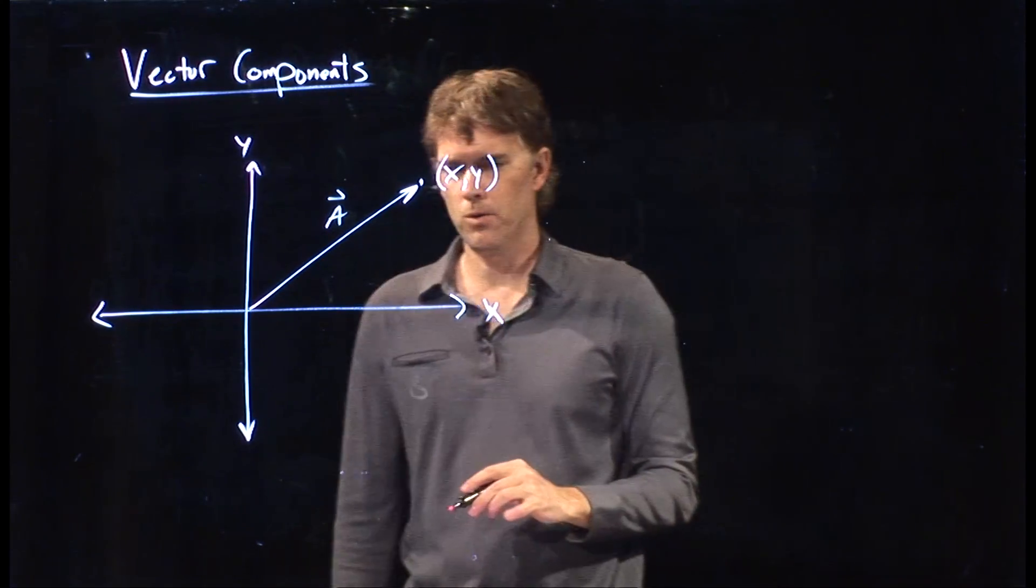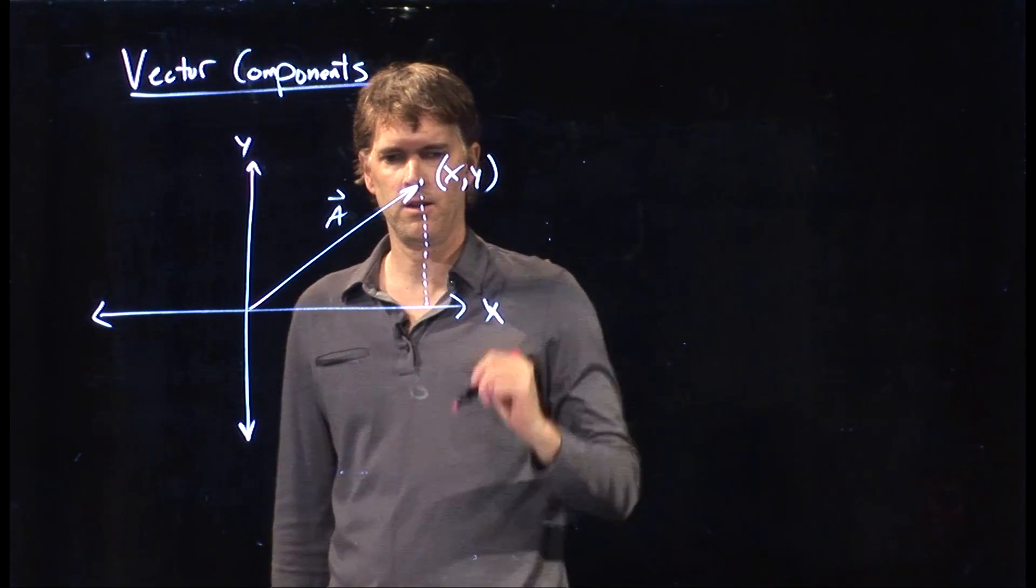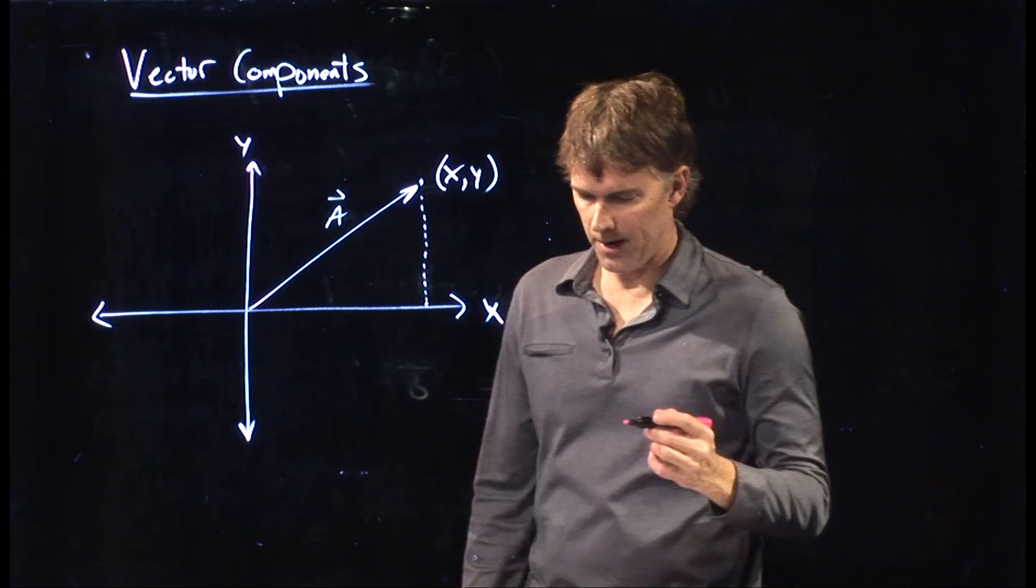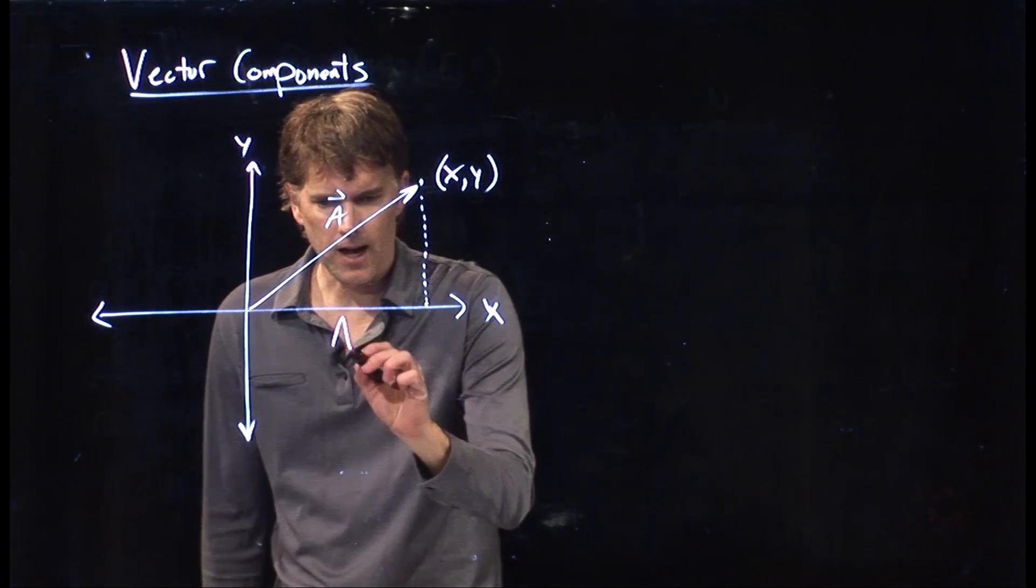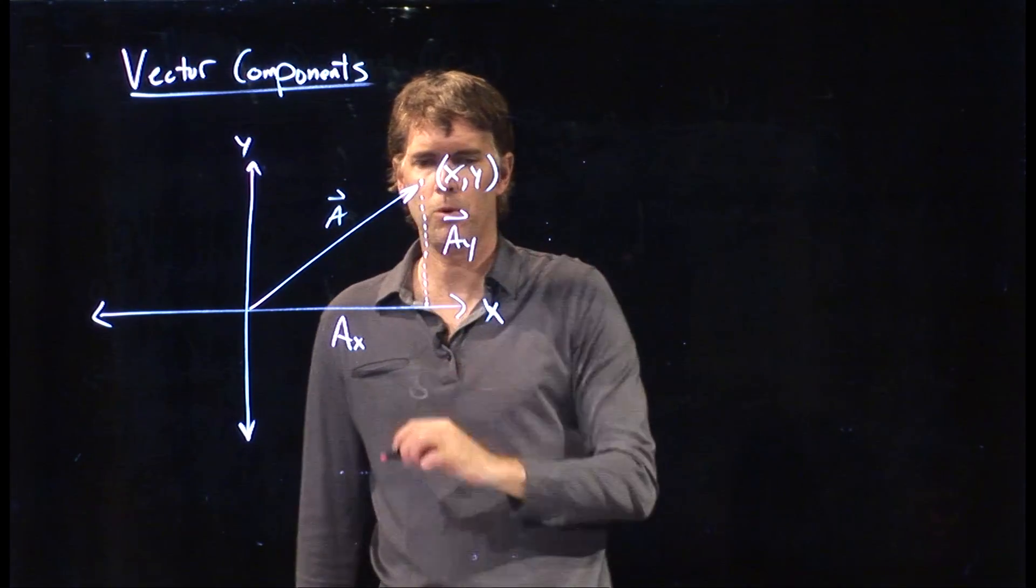And we know exactly what x and y are. x is how far did I go across in x. y is how far up did I go in y. And so this side is a sub x and this side is a sub y.